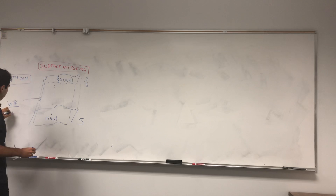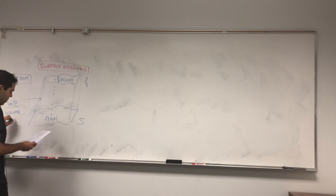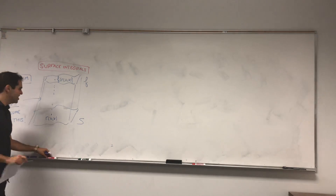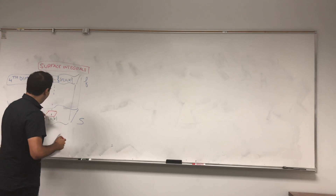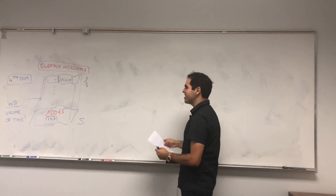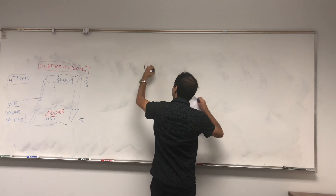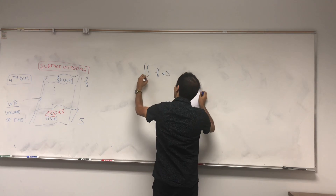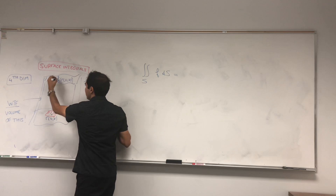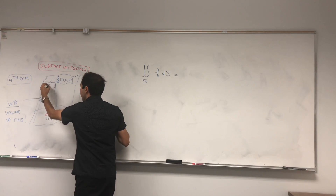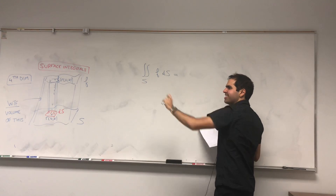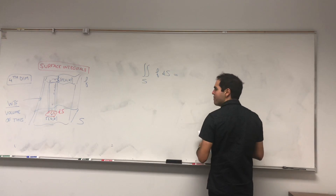So you want to find the volume of this. And it turns out we already have the machinery to do that, because remember last time we defined those little parallelograms dS. So the question is: how do we find that volume? It's the double integral of F dS over the surface S — it's simply base times height. You double-integrate those little cylinders.